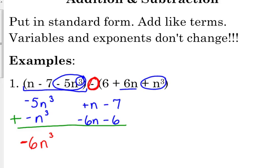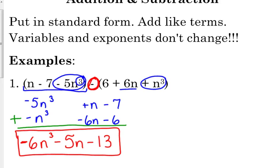So that's negative 6n cubed. I don't have an n squared, so then positive 1 minus 6, or positive 1 plus negative 6 is negative 5n, and negative 7 plus negative 6 is negative 13. So here's our final answer.